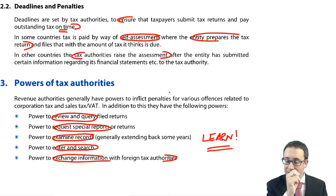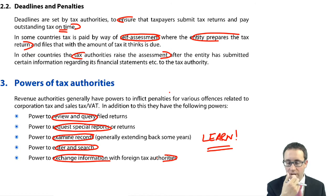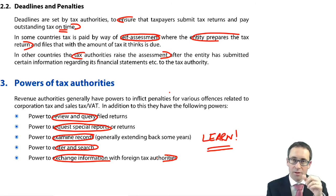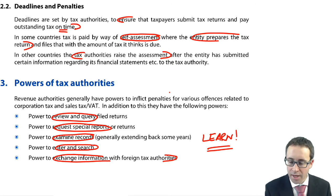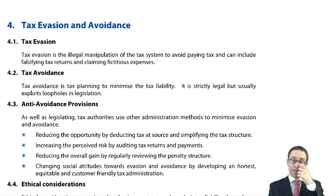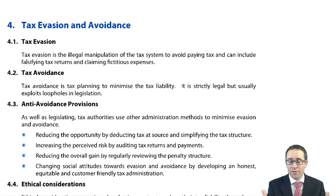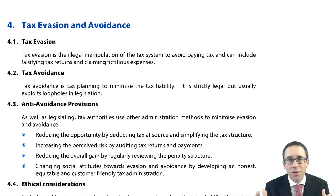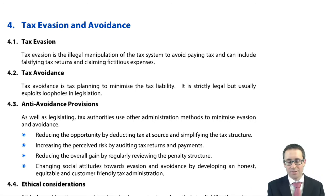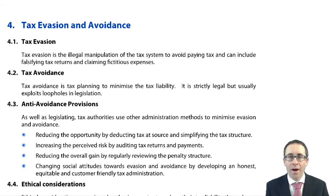This is the kind of material that could come up as a potential objective test question — select all of the following which are powers of the tax authorities. If you've learned them, great. If not, you should spend more time working through the material and practising the questions. If you've got to this second-to-last session and you haven't practised any questions, get into that question bank and start practising. That's the way to revise — practice, practice, practice.